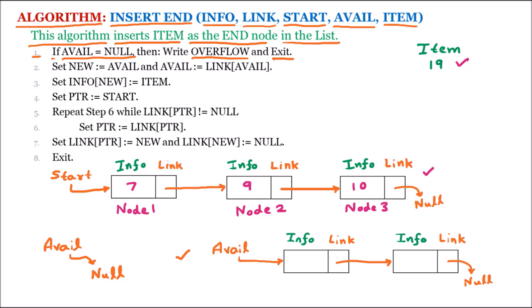But let us suppose we don't have the case of avail equal to null, so we already have our available list which contains a few nodes. Now we go to line 2. We have available spaces, so set new equal to avail. New is a pointer which is taking the value of avail, and avail contains the address of the first free node. That means inside new we have the address of the first free node, so by this we are taking the first node from the free list.